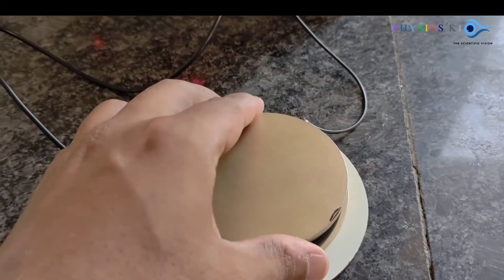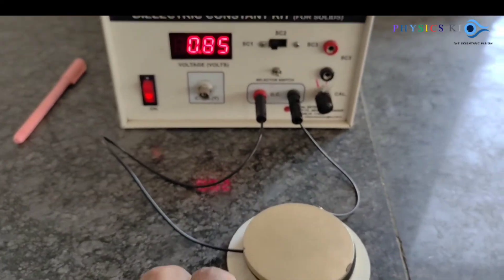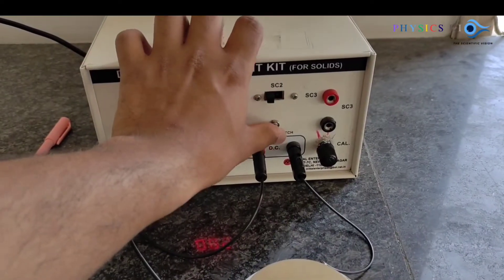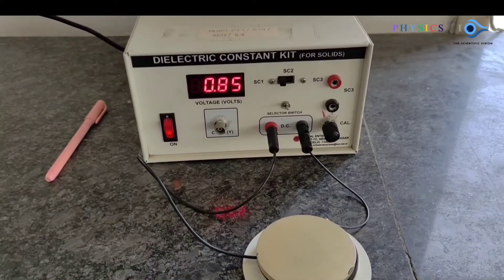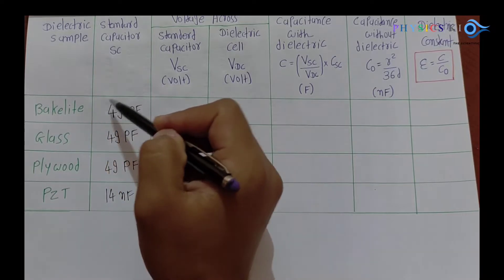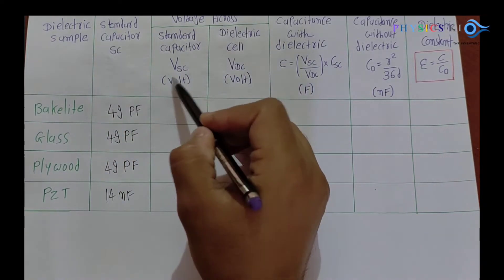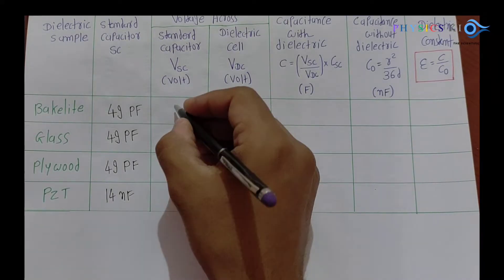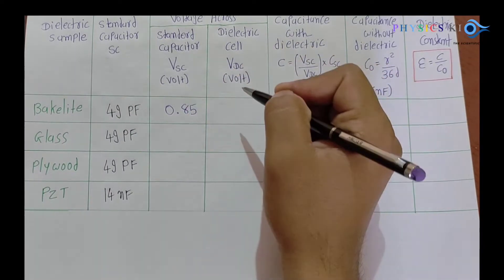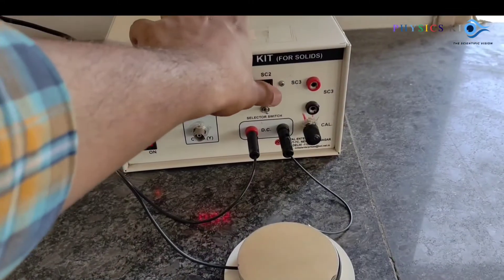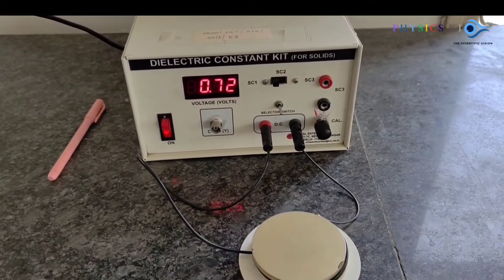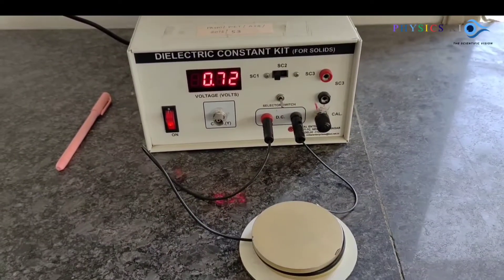Starting with the bakelite material — I am placing the bakelite between the two plates. When the switch is in the upward direction, it shows V_HC (voltage across the standard capacitor). The value is 0.85, so I note it down. The standard capacitor is set to HC1. Now switching to the downward direction gives V_DC (voltage across the dielectric cell), which is 0.72.